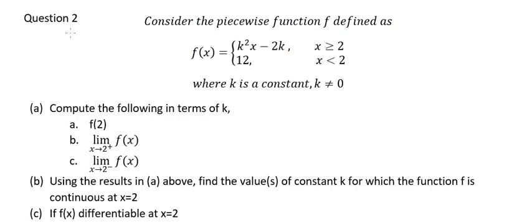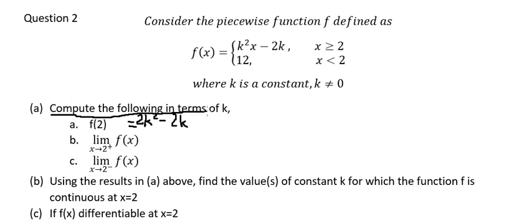Now let's go to question number two. Consider the piecewise function. Question a: we need to find f of two. We see that s equals two, so we just put two in for s. The answer should be k squared, and we put two in for s, giving us k squared minus 2k. The question wants us to compute the following in terms of k, and this is the answer for part a.